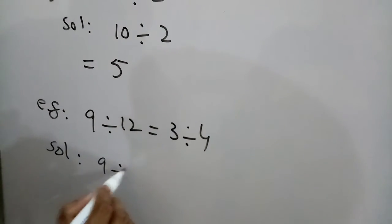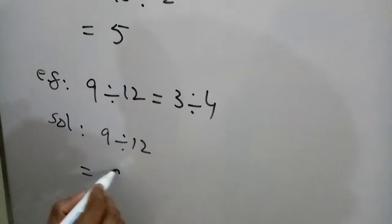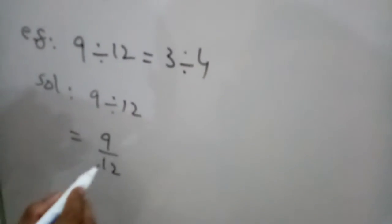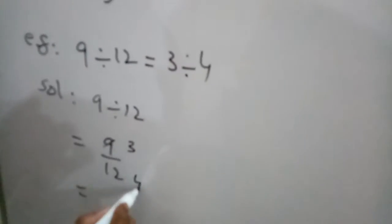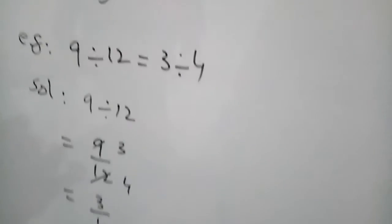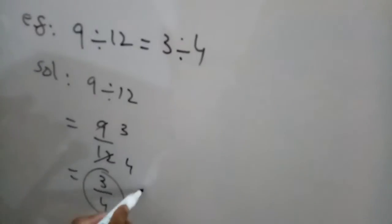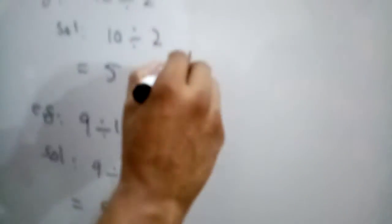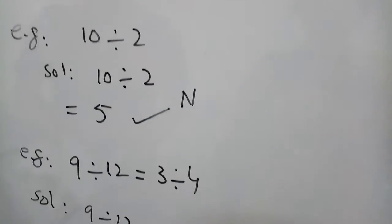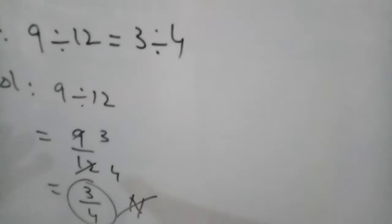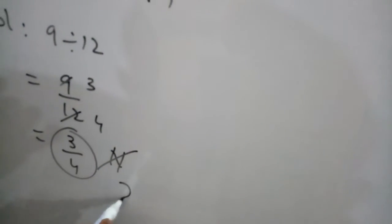9 divided by 12, we can write this in fraction form. We divide: 3 times 3 is 9, and 3 times 4 is 12. So the result is 3 over 4. This is not a natural number. What kind of number is this?